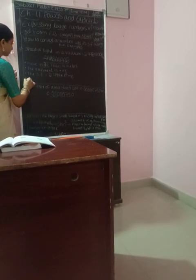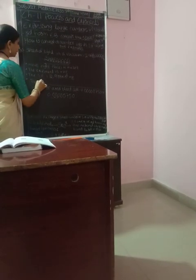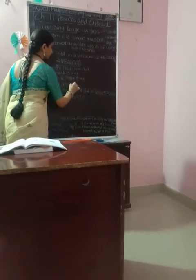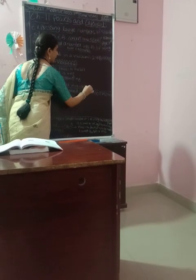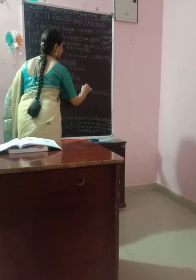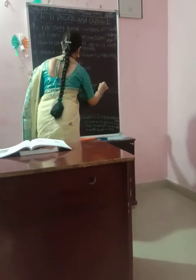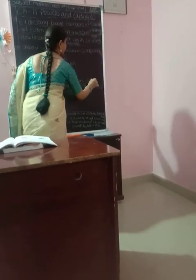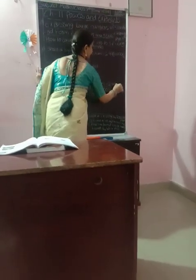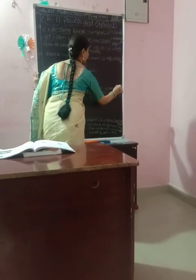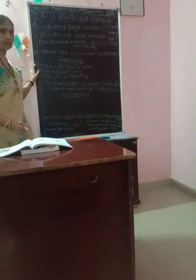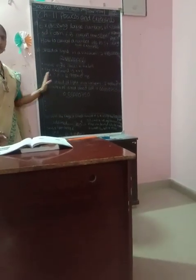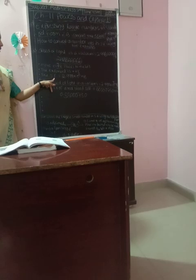Therefore the speed of light, in proper units, equals 2.998 into 10 to the power of 8 meters per second. You can understand that answer. The conversion is complete. First example is over.